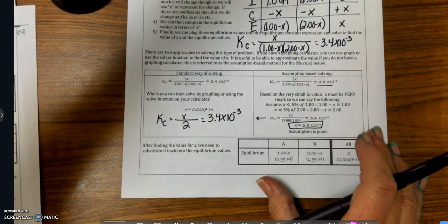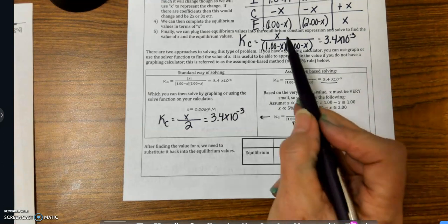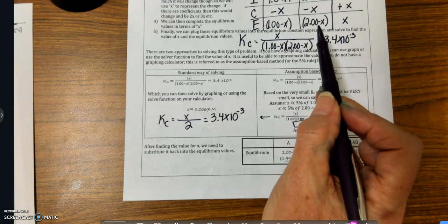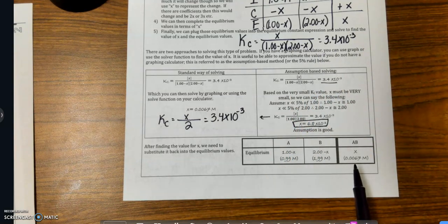Once I do that, then I can go right back up here and plug this X value in here. And I get these values. And that gives me my equilibrium values for all three of the species.